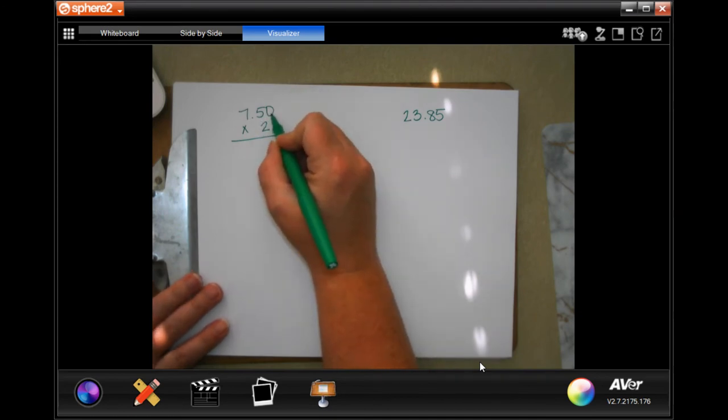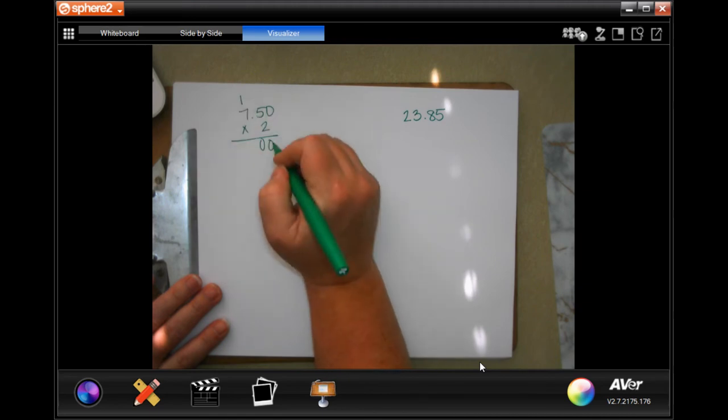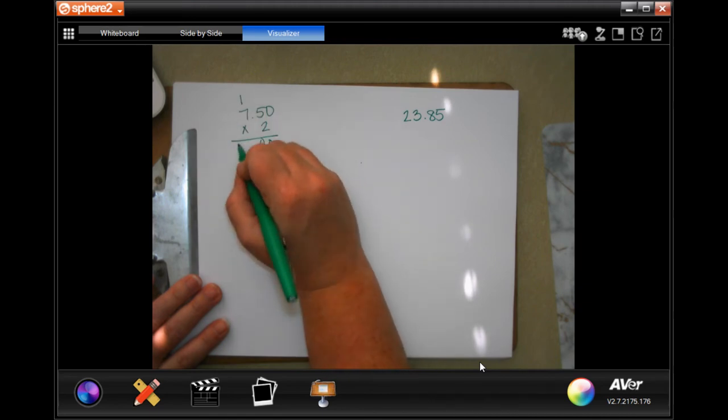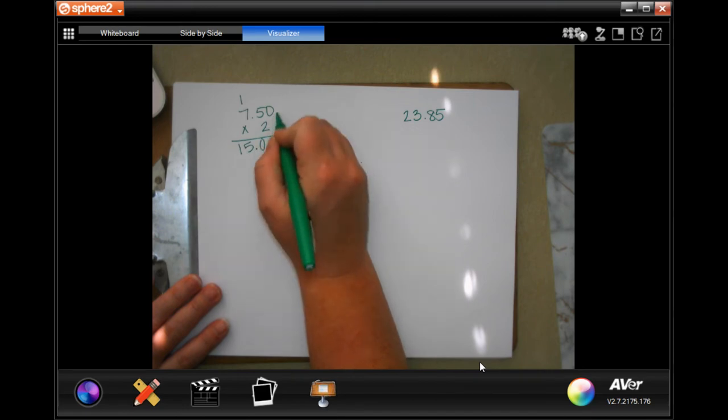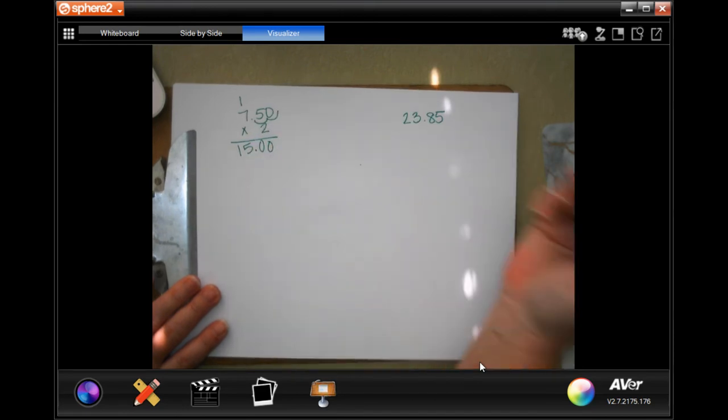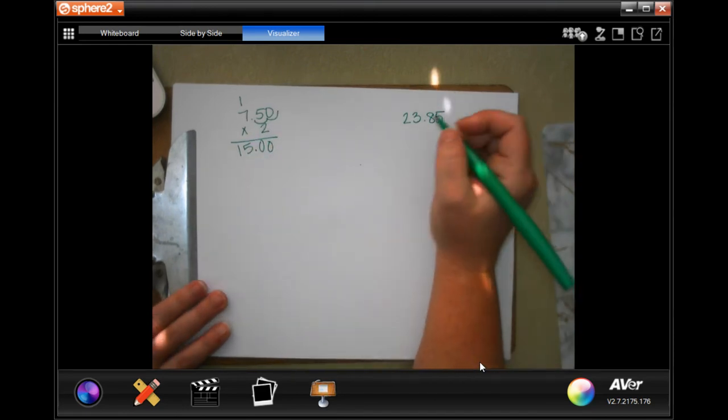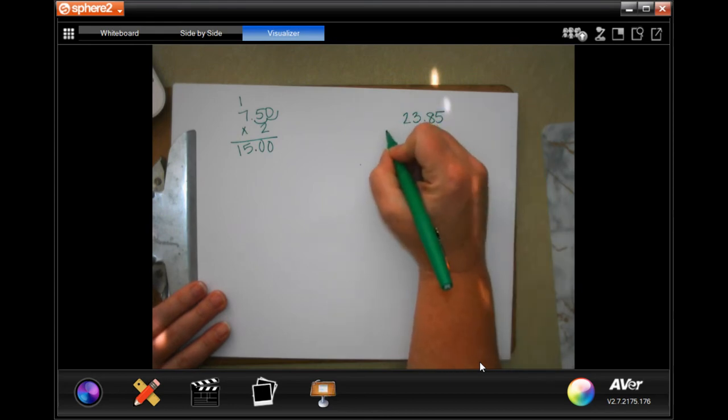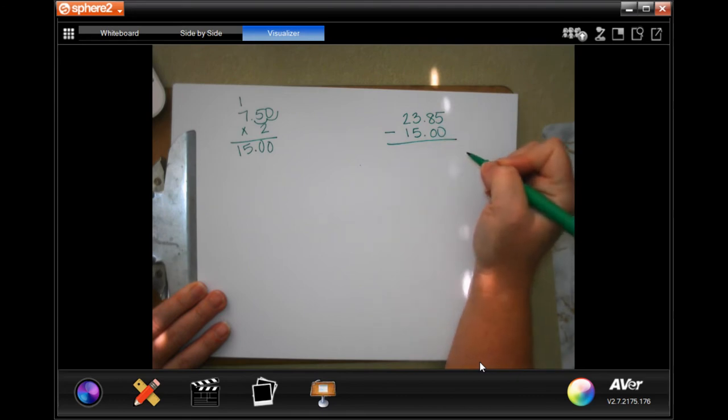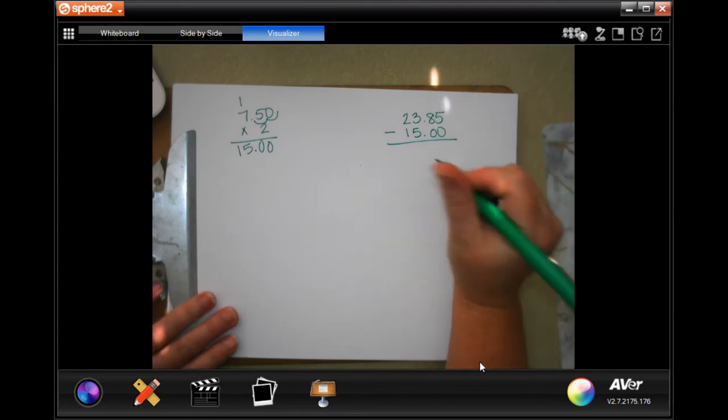So 2 times 0, 0. 2 times 5 is 10, carry our 1. 2 times 7 is 14, plus 1 is 15. We went in 1, 2 times. We're going 1, 2 times, $15. So, oh, sorry. We actually need to take the $15 away from what he paid and didn't get change for.